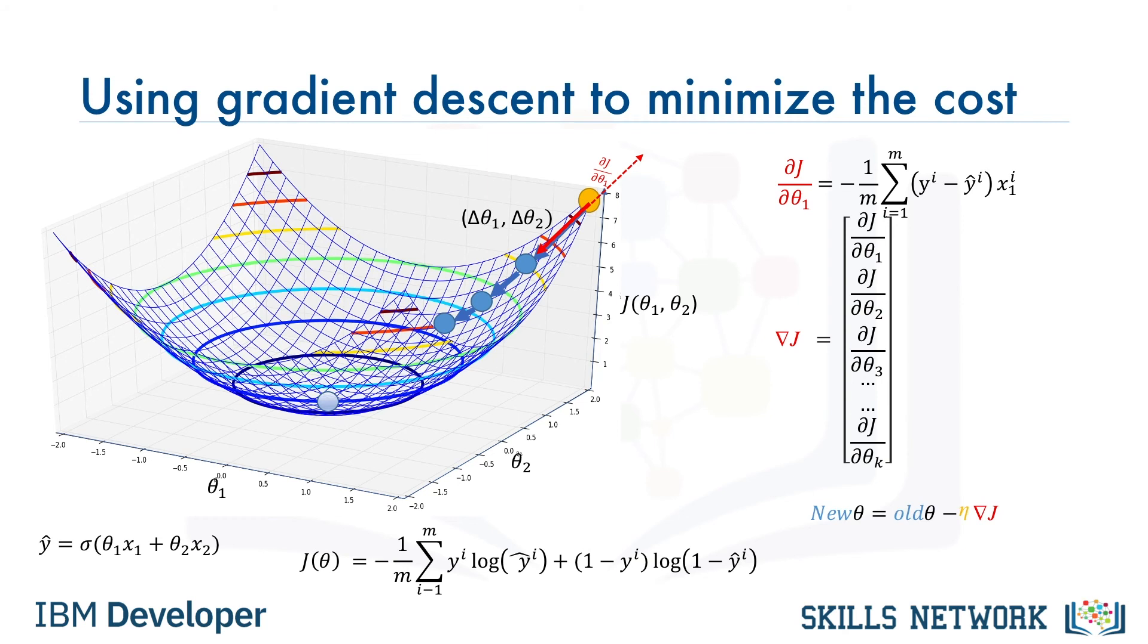Also, we multiply the gradient value by a constant value mu, which is called the learning rate. Learning rate gives us additional control on how fast we move on the surface. In sum, we can simply say gradient descent is like taking steps in the current direction of the slope, and the learning rate is like the length of the step you take.